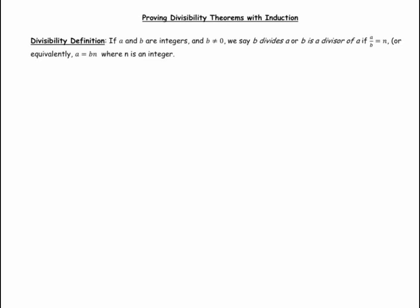Before we get into those, we need to define what we mean by divisibility. The definition is: if A and B are integers and B does not equal 0, we say that B divides A, or B is a divisor of A,